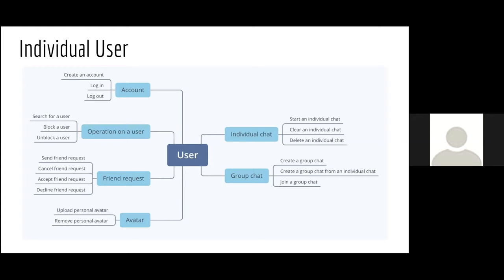Generally, if we have an operation to create something, we also have one to delete or undo it. We have friend requests so there is a concept of friend lists between users, and friendships are always mutual. A user can send a friend request to another user they have searched for, cancel it before it is replied to, and the other user can accept, decline, or ignore it.